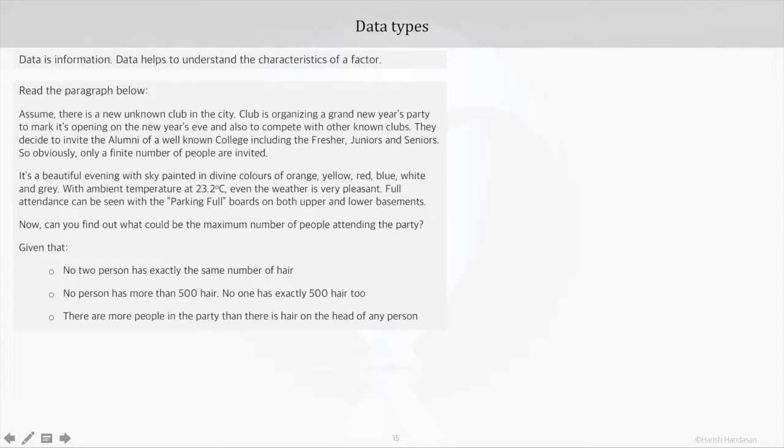Full attendance can be seen with the parking full boards on both upper and lower basements. Now can you find out what could be the maximum number of people attending the party? You have been given that no two persons have exactly the same number of hair, no person has more than 500 hair, no one has exactly 500 hair too, and there are more people in the party than there is hair on the head of any person.